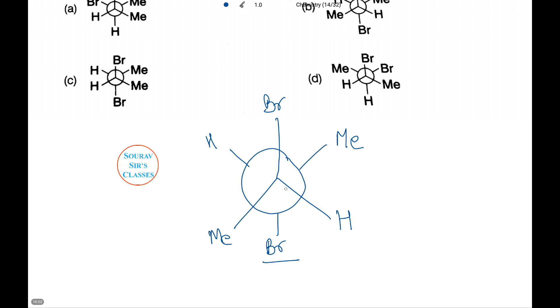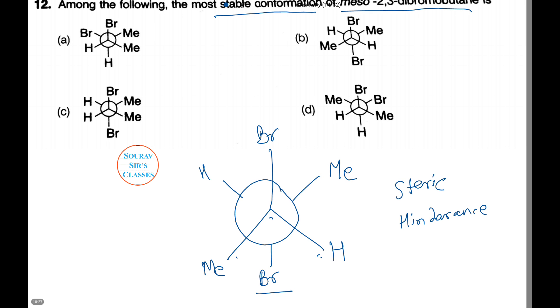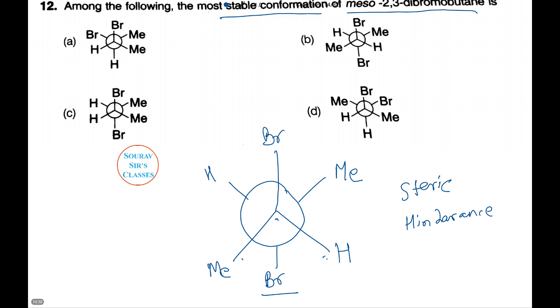The reason is in this conformation the bulky methyl group and the heavy bromine atom on adjacent carbon atoms are as far apart as possible. As a result, the steric hindrance between the two methyl groups and bromine atoms gets reduced, which leads to increased stability. Hence this conformation is the most stable among all our options, and from the figure, number B is the answer.